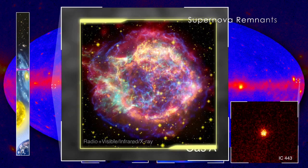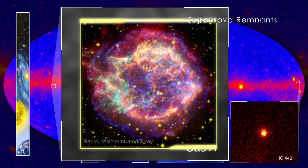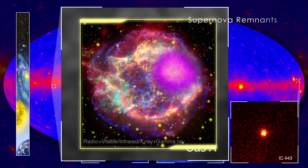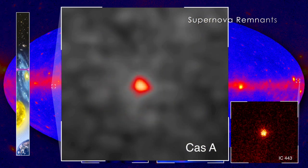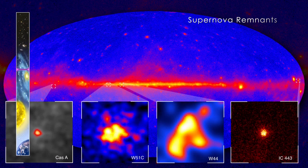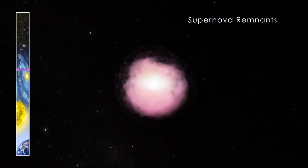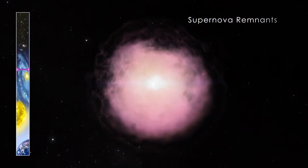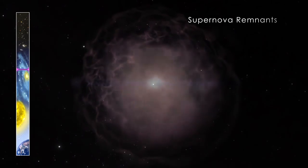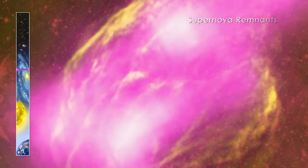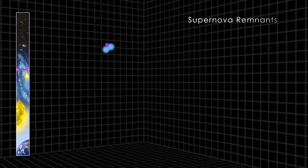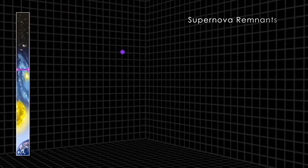New images show where supernova remnants emit gamma rays a billion times more energetic than visible light. This glow suggests that the remnants are a source of cosmic rays, protons and electrons accelerated to near light speed. Observations of two supernova remnants by NASA's Fermi Gamma-ray Space Telescope conclusively show these supernova remnants are accelerating protons. When they strike protons in nearby molecular clouds, they produce the gamma-ray emission Fermi sees.